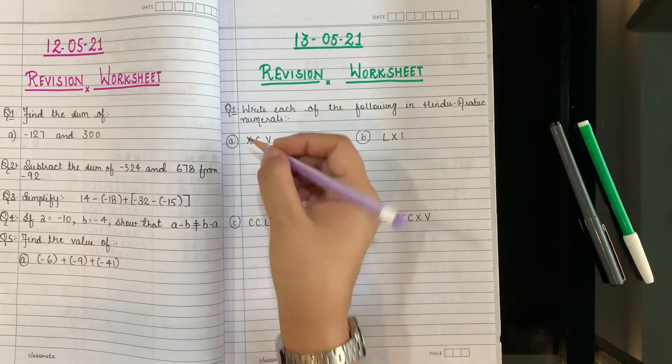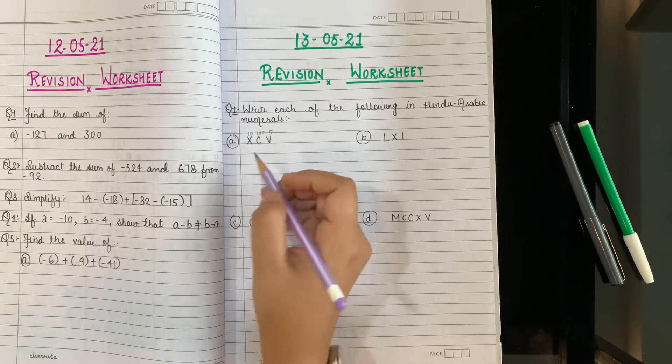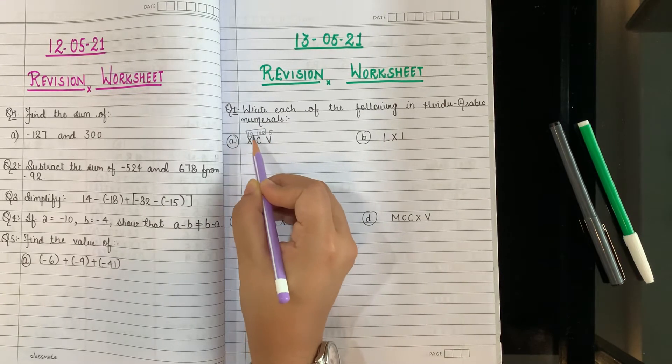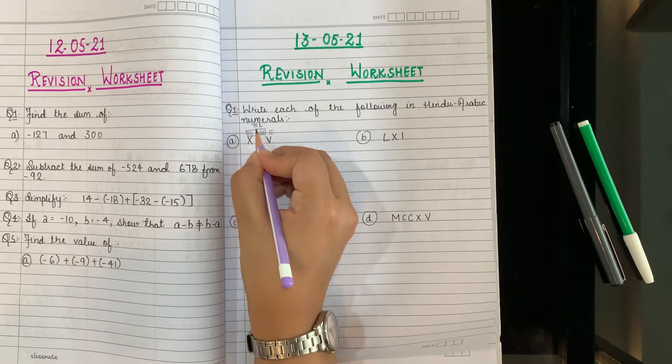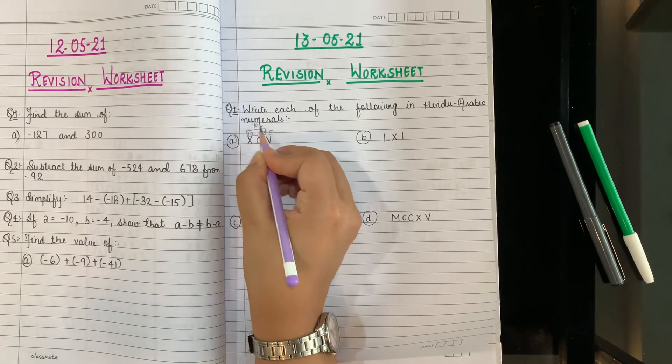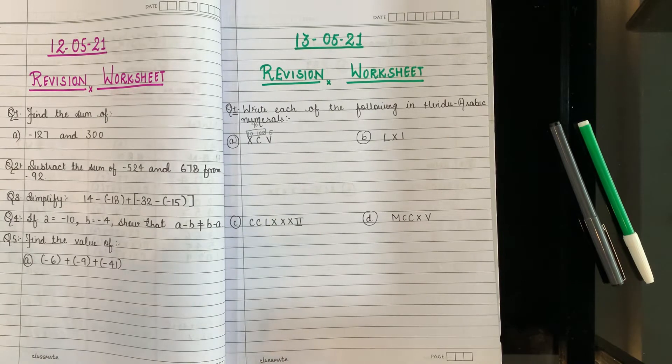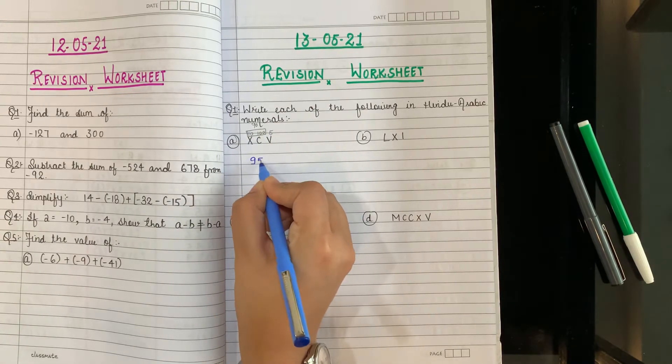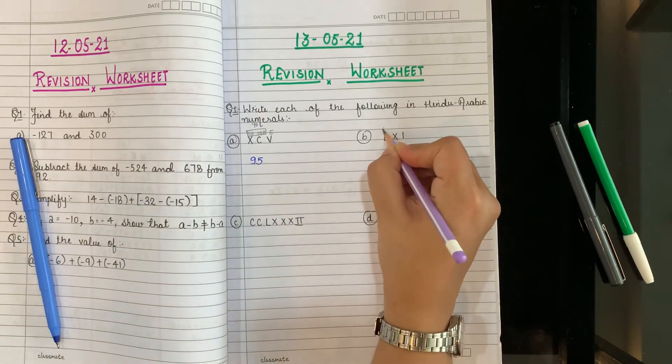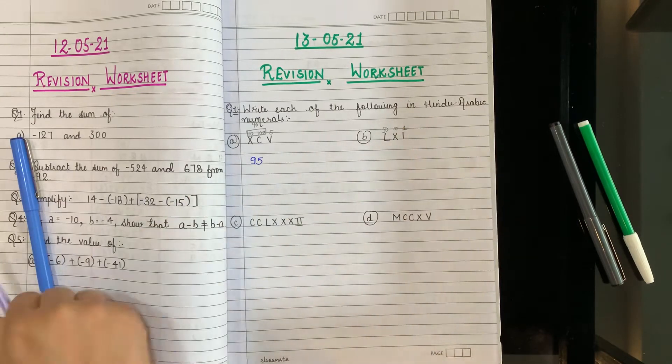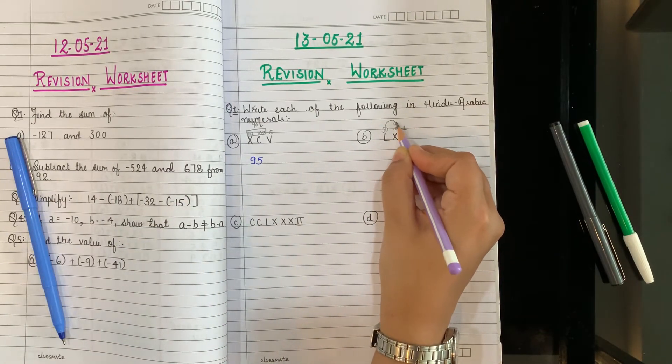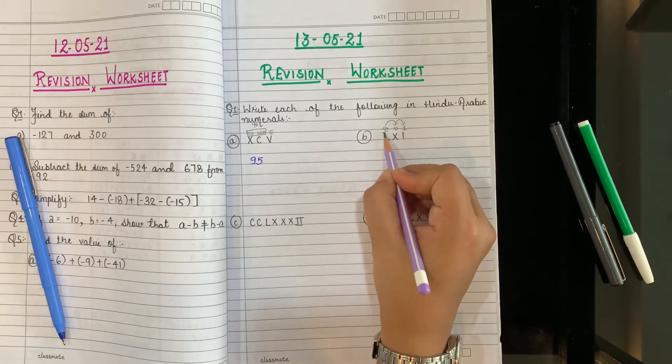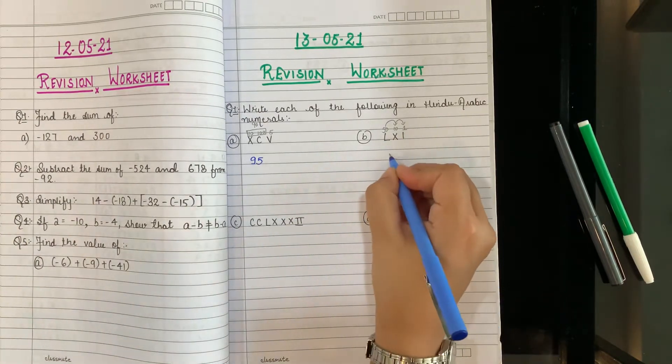What is this? First of all we write its value on the top. This is 10, this is 100, and this is 5. So this is 95.